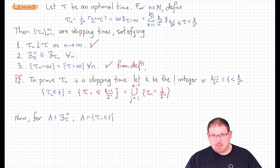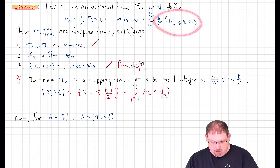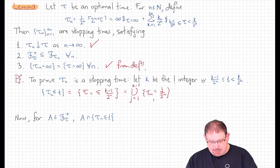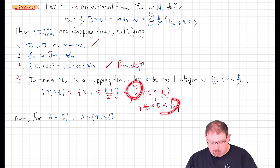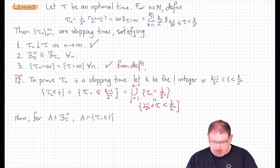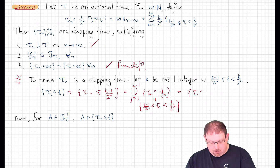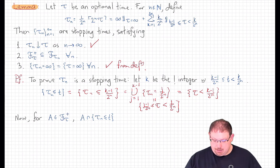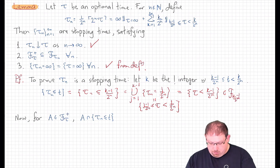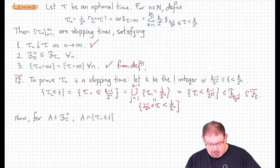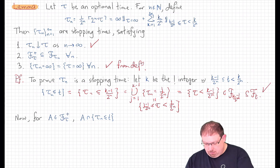From the definition, the event {tau_n = j/2^n} is exactly the event that tau is in [(j−1)/2^n, j/2^n). The union over j from 1 to k−1 of these disjoint events is the same as the event {tau < (k−1)/2^n}. Since tau is an optional time, that event is in F_{(k−1)/2^n}. And since (k−1)/2^n ≤ t, that's contained in F_t, which shows this event is in F_t and therefore tau_n is a stopping time.